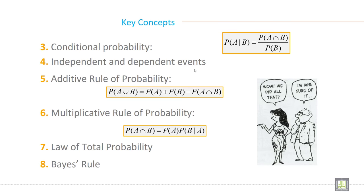Key concepts. So conditional probability: it is probability of A given B is equal to probability of A intersection B divided by probability of B.